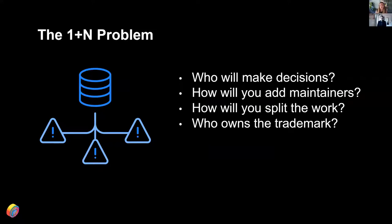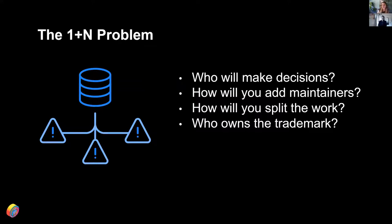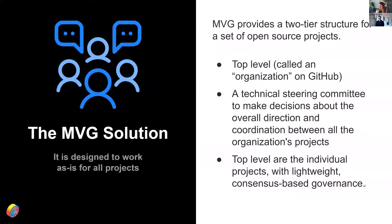So here's what MVG is solving. Everything starts out well and good when it's just one maintainer on a project — when you have total control and direction, things operate fairly smoothly. The problems start when the project moves from having one maintainer to expanding. We've called this the one-plus-n problem: things get complicated when you move from one maintainer to one-plus-n maintainers of your open source project. Questions come up around where to host it, governance, and decision making. That's where MVG comes into play.